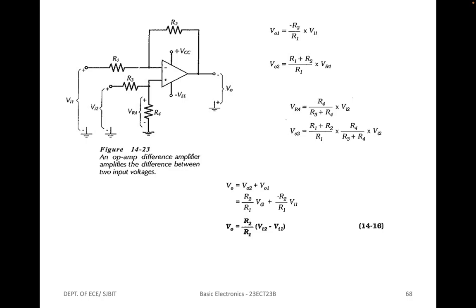Advantages of operational amplifiers include: high gain — op-amps offer a high ratio of conversion from input signal to output, ideal for applications such as high quality imaging; low noise and distortion — op-amps provide relatively high amplification with relatively low noise or distortion; compact size — op-amps are compact, allowing them to be integrated into larger circuits; high input impedance — op-amps have very high input impedance, which prevents losses and gives the device almost infinite gain.